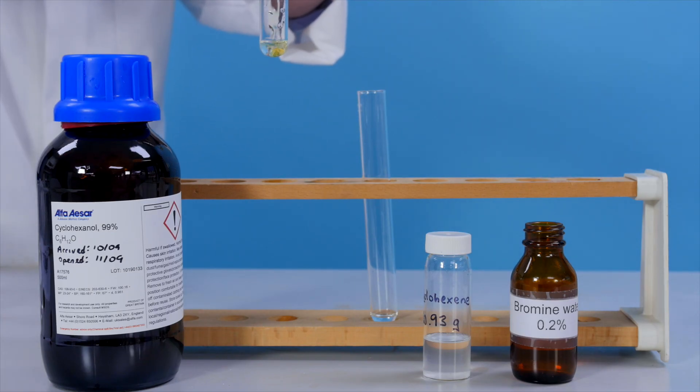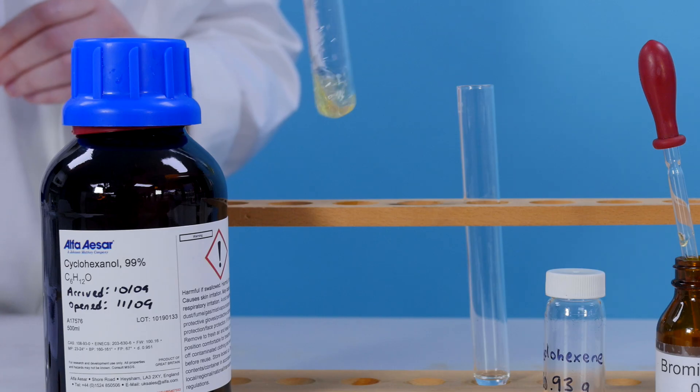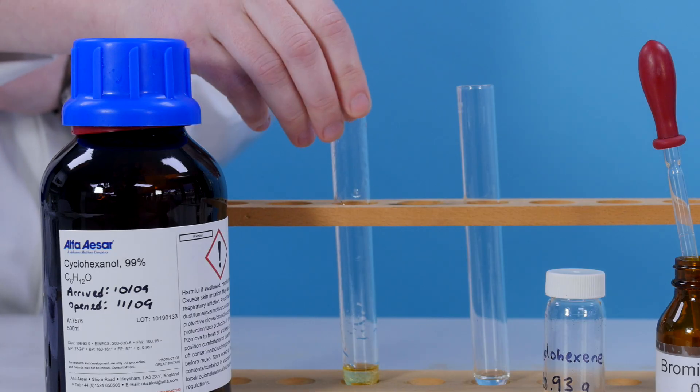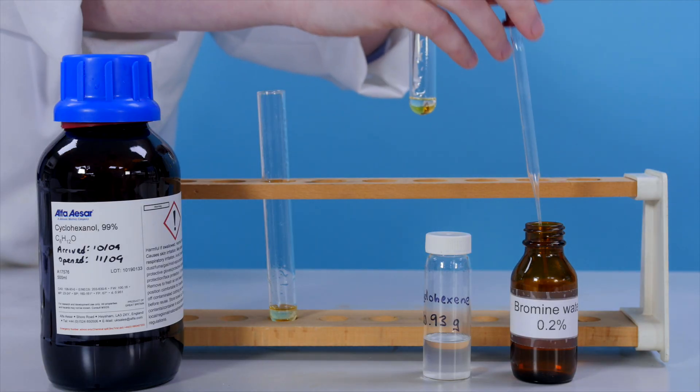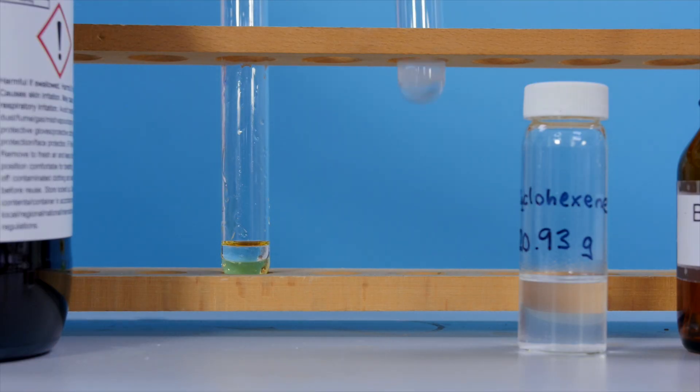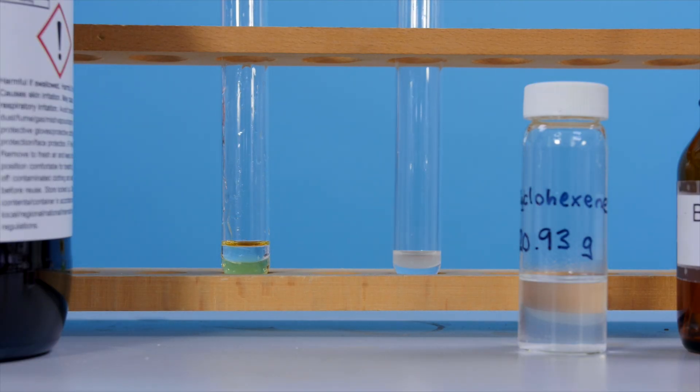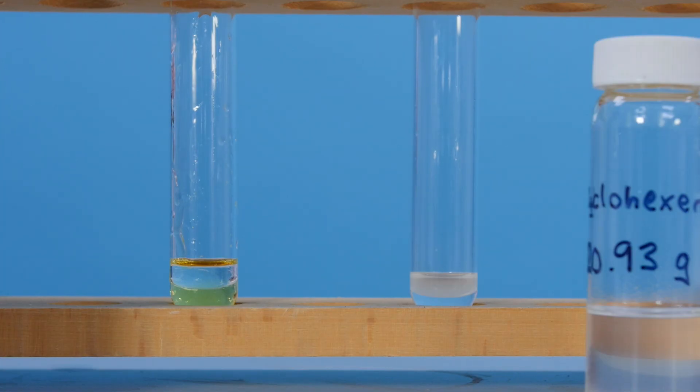We could use chemical tests to check the identity of a product. Here, for example, we can use bromine water to compare the hydrocarbon product to the alcohol used as the starting material. To do this, add a few drops of bromine water to test tubes containing small amounts of the two compounds. Then shake. The bromine water is decolourised in the test tube containing the product, whereas there is no colour change in the tube with cyclohexanol. The alcohol has therefore been converted to a cycloalkene.